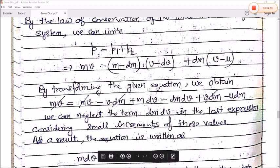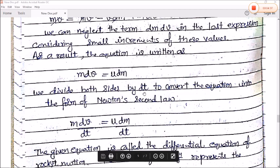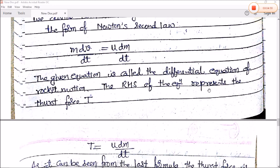Considering small increments of these values, the result equation is written as M*dv equals u*dm. Now dividing both sides by dt to convert the equation into Newton's second law, we get M*(dv/dt) = u*(dm/dt). This equation is called the differential equation of rocket motion. The RHS of the equation represents the thrust force.